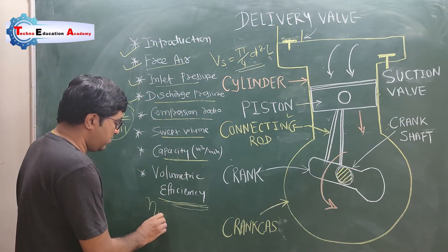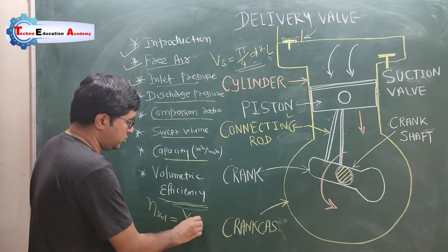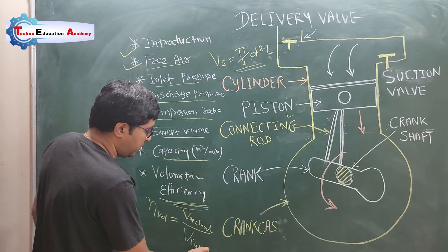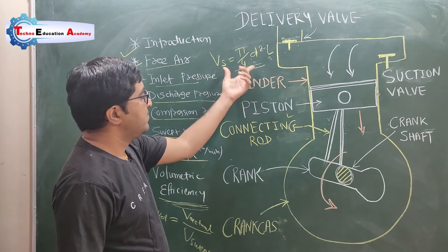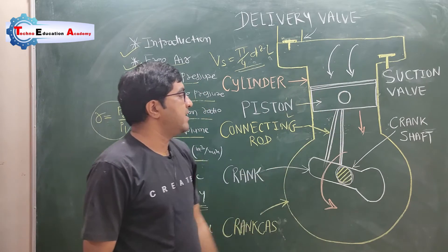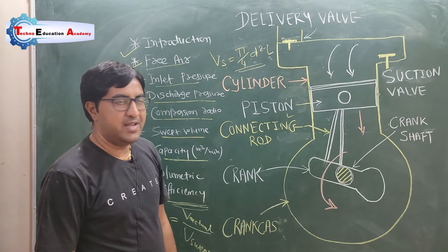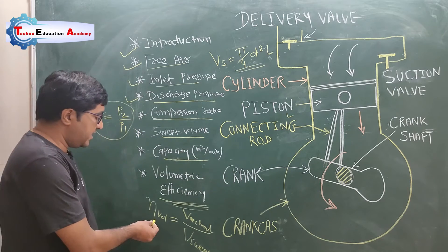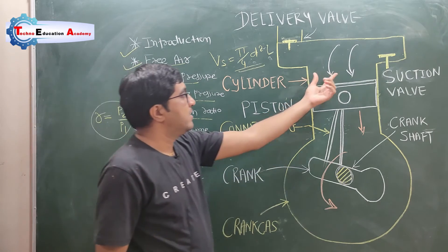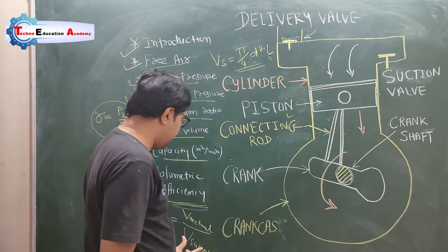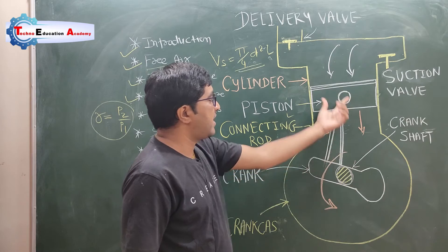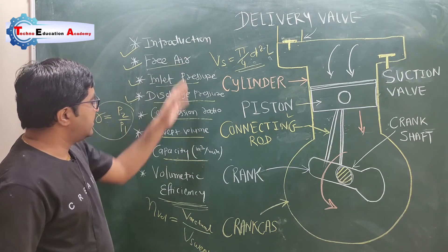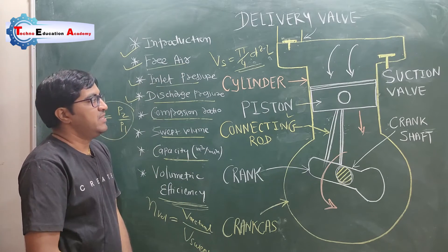The next term is volumetric efficiency. Volumetric efficiency is the ratio of the actual volume of air sucked into the cylinder divided by the swept volume. The swept volume is the volume covered by the piston as it travels from one dead center to another — (π/4) × D² × L. So volumetric efficiency is the ratio of actual air volume entering the cylinder to the swept volume, and these are the basic terminology related with the compressor.